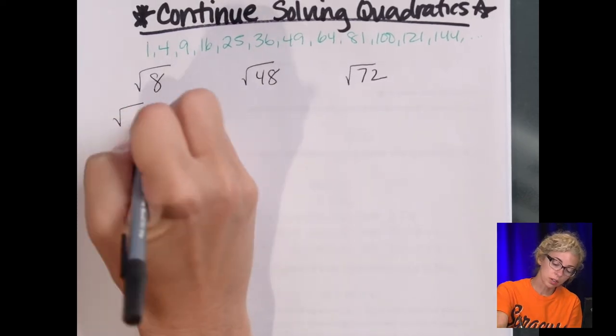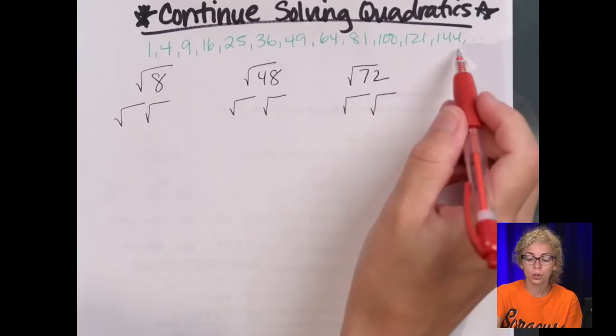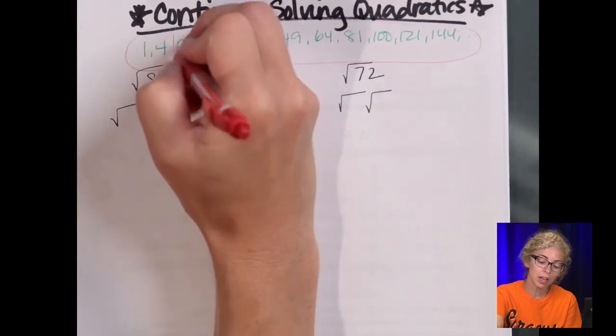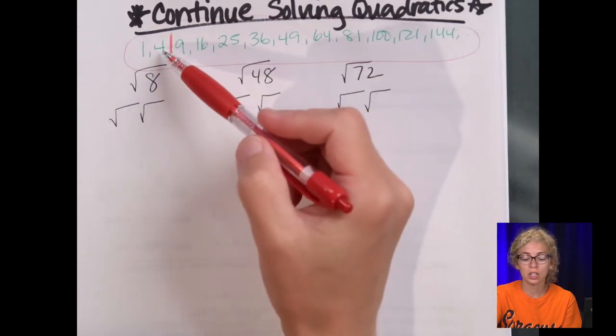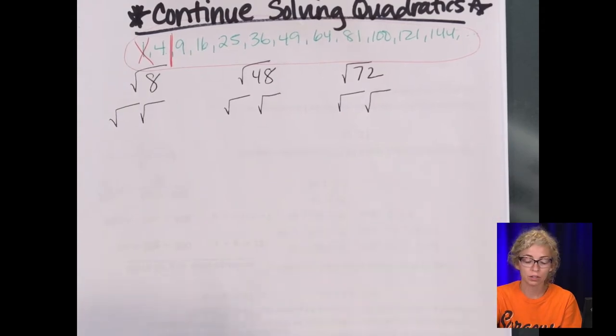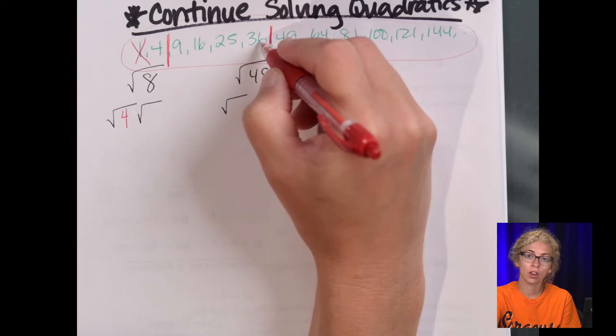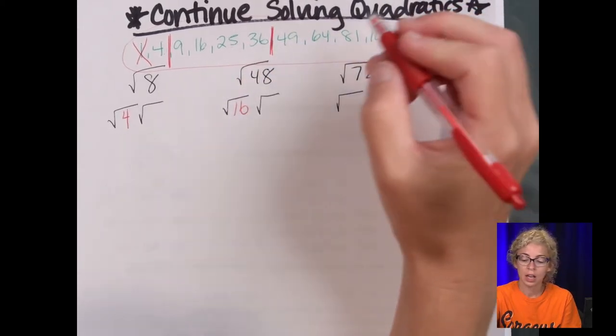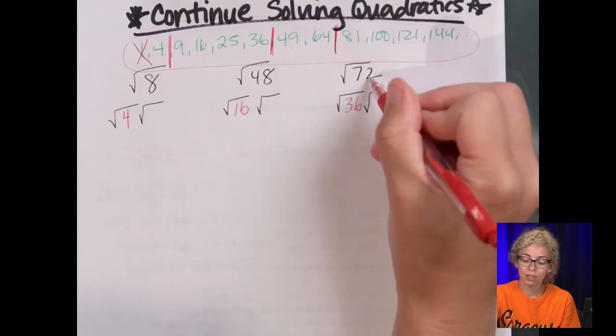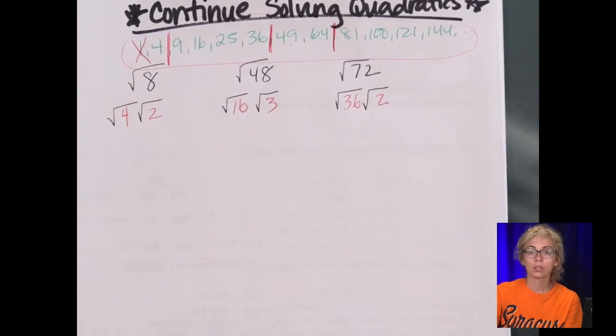And what I like about Delta Math to start is there's a guided practice section. So when you're looking to see which one of these numbers goes into the radicand, the number underneath, I'm going to put a line on where 8 falls. So 8 falls here, so I only need to check 4 and 1. We don't ever want to use 1 because if we divide anything by 1, we get the number back. So 4 does go in 8. 48 falls here. 36, is that a factor? No. 25, no. 16, yes. And then 72 falls here. 64, no. 49, no. 36, yes. So 72 is 36 times 2, 48 is 16 times 3, and 8 is 4 times 2.